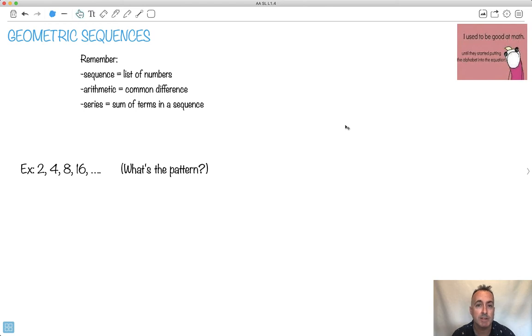Here we're going to be learning about geometric sequences. I like this meme: I used to be good at math until they started putting the alphabet into the equation. Actually, this picture is taken from a blog called Hyperbole and a Half. It's amazing. This girl Allie Brosh does it, she's so talented. They're really deep too. She's actually written two books. Anyway, we're gonna talk about geometric sequences.